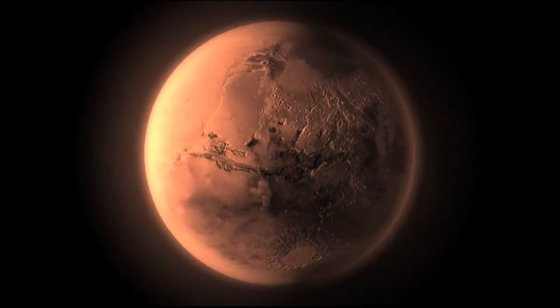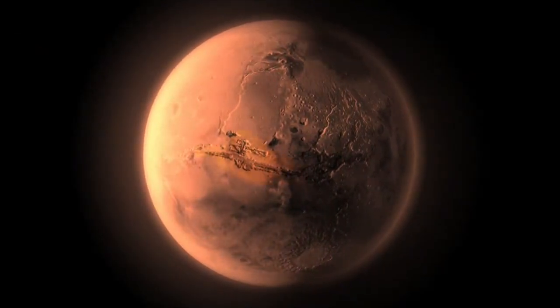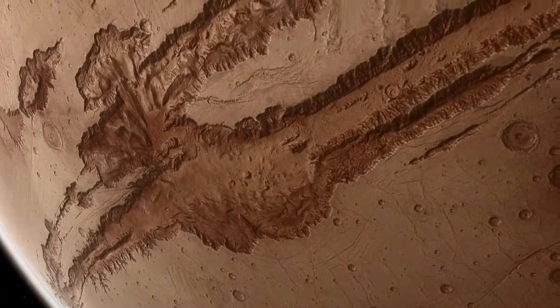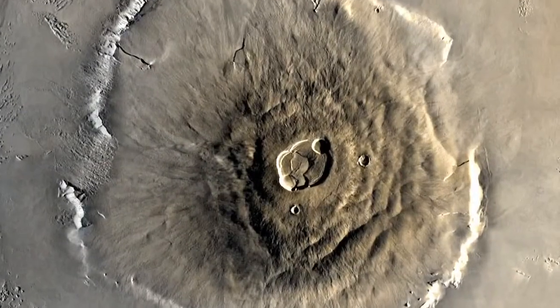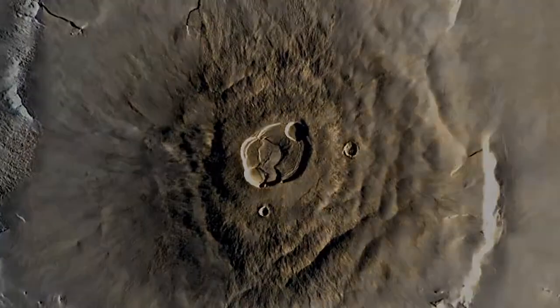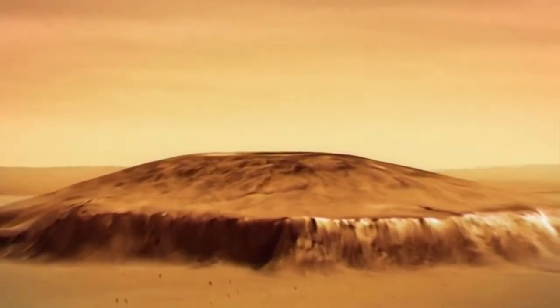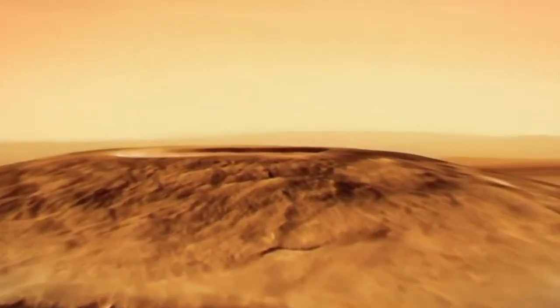These include a huge canyon known as Valles Marineris, that is so long it would stretch from the Atlantic to the Ural mountain range, and the largest volcano in the solar system, Olympus Mons. This huge volcano is nearly three times higher than Mount Everest.